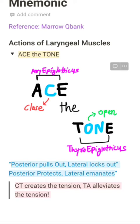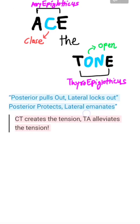The next rhyme is: 'Posterior pulls out and lateral locks out.' This means that posterior cricoarytenoid abducts the vocal cord, and lateral cricoarytenoid adducts the vocal cord.